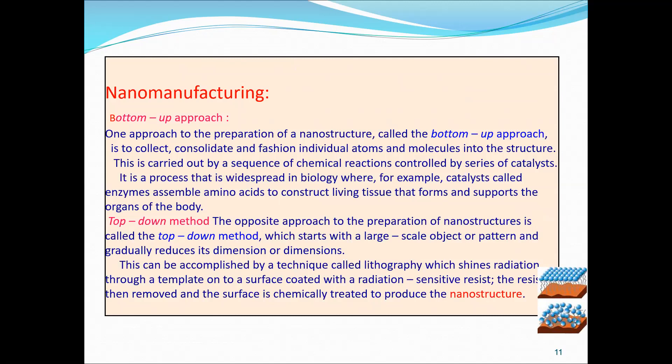The top-down method starts with a large-scale object and gradually reduces its dimensions. This can be accomplished by lithography, which shines radiation through a template onto a surface coated with a radiation-sensitive resist. The resist is then removed and the surface is chemically treated to produce the nanostructure.